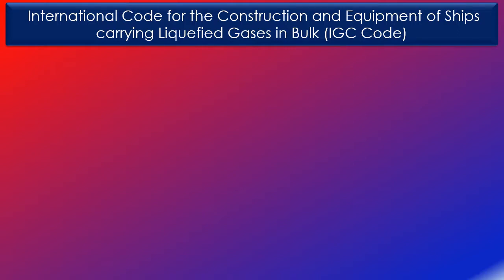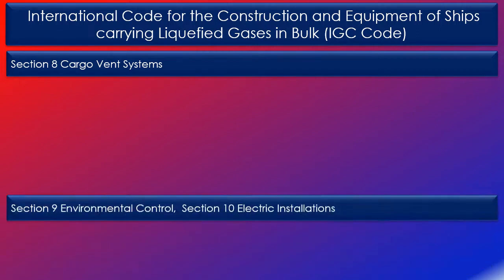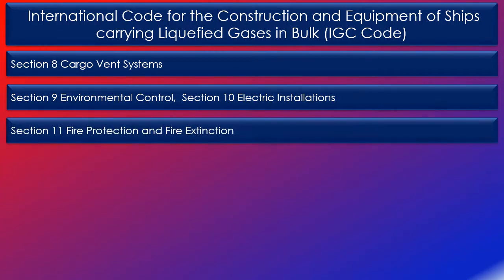Section 7 on cargo pressure and temperature control systems sets out the requirements for refrigeration systems used in maintaining loading and unloading of cargoes. Section 8 on cargo ventilation systems sets out the requirements of pressure relief systems, additional pressure relieving systems, liquid level controls, vacuum protection systems, and size of the valves. Section 9 on environmental control and Section 10 on electrical installation sets out the requirements for environmental control within the hold spaces, including inerting and types of electrical equipment.